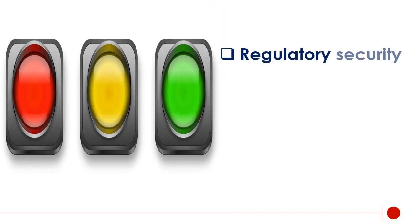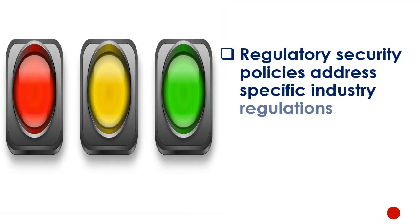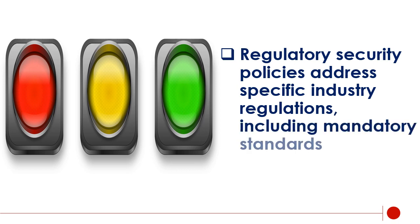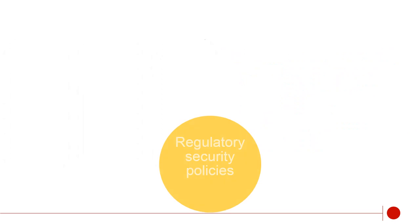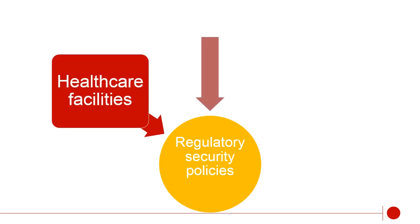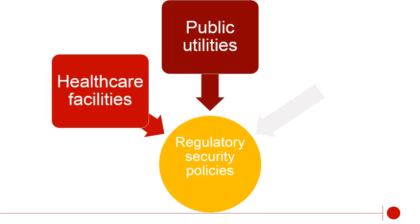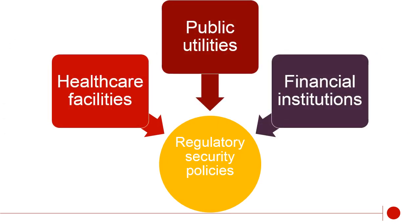Regulatory security policies address specific industry regulations, including mandatory standards. Examples of industries that must consider regulatory security policies include health care facilities, public utilities, and financial institutions.